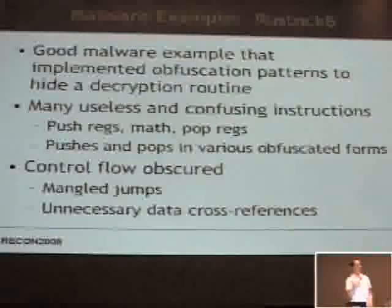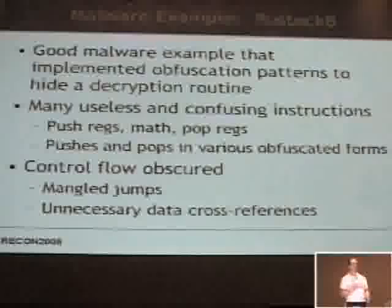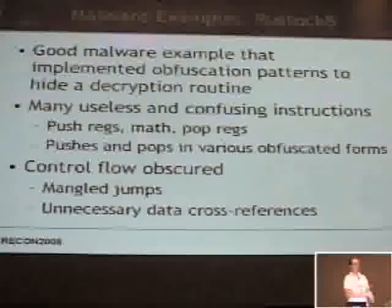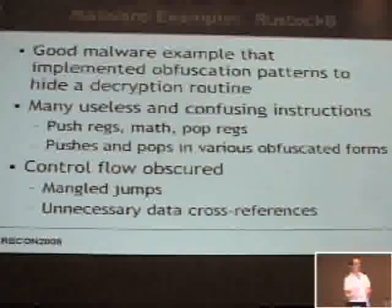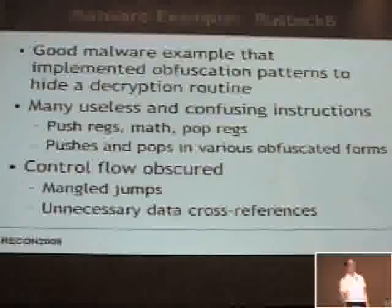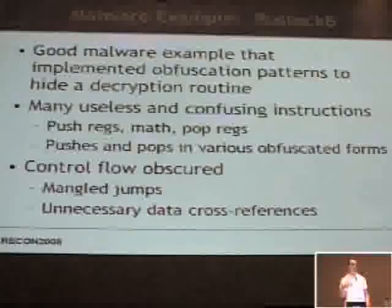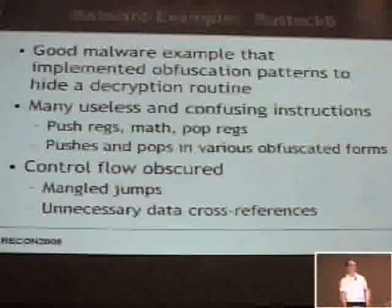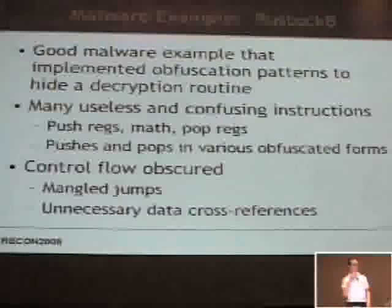Now to the example — Rustoc B. This is a good example because it implements a lot of obfuscation patterns. Whenever we come across new malware, we just take the common patterns and dump them into our deobfuscator. It's a one-time thing so it doesn't take an incredible amount of time, and it saves us a ton of time. We have things like pushing registers onto the stack, doing math on them, and then popping them back off — lots of useless stuff. They also obfuscate a key by doing math on it, and we just like to get at that core functionality faster without having to wade through the obfuscation.